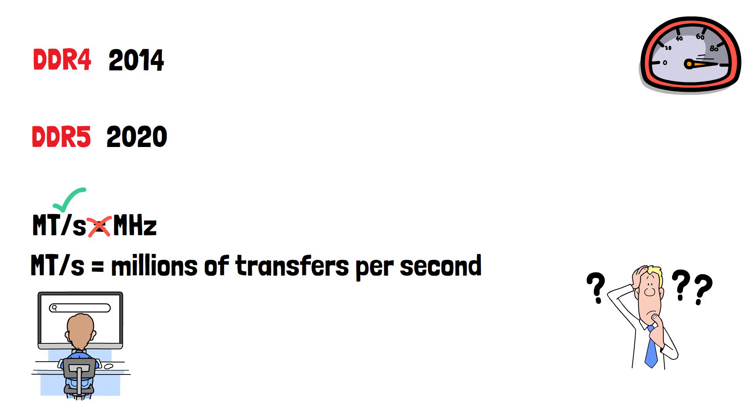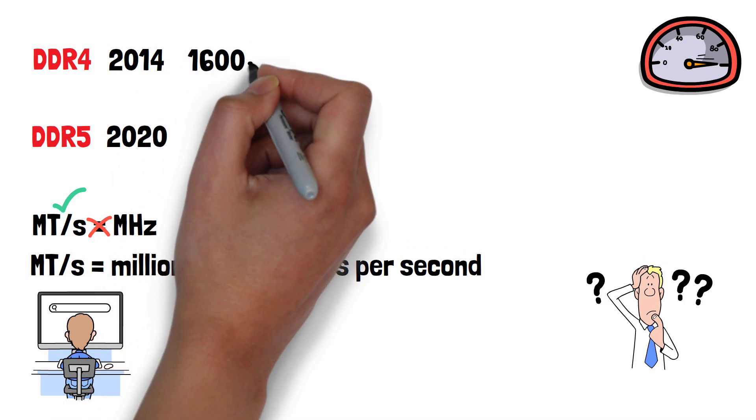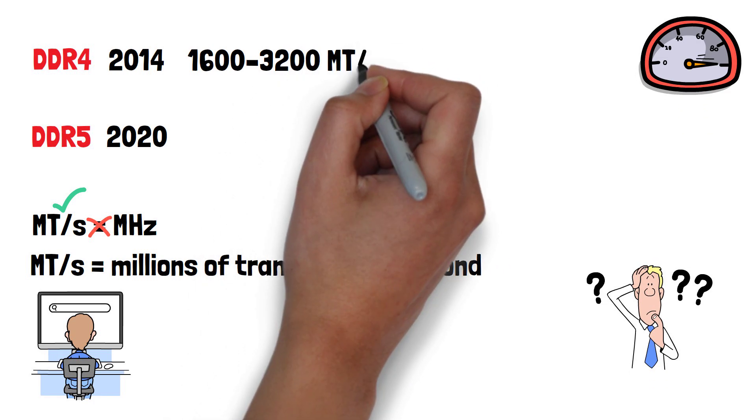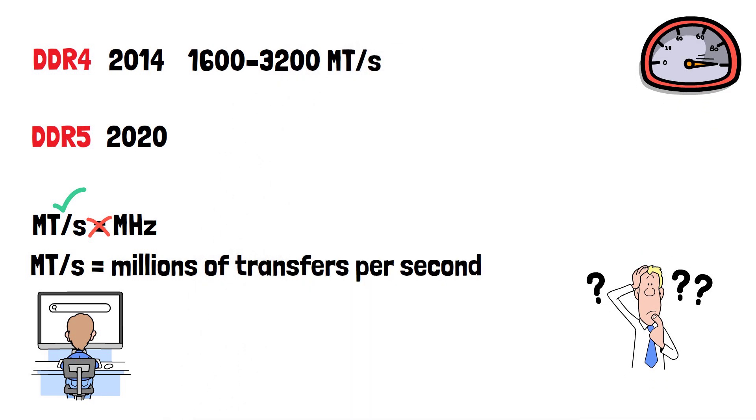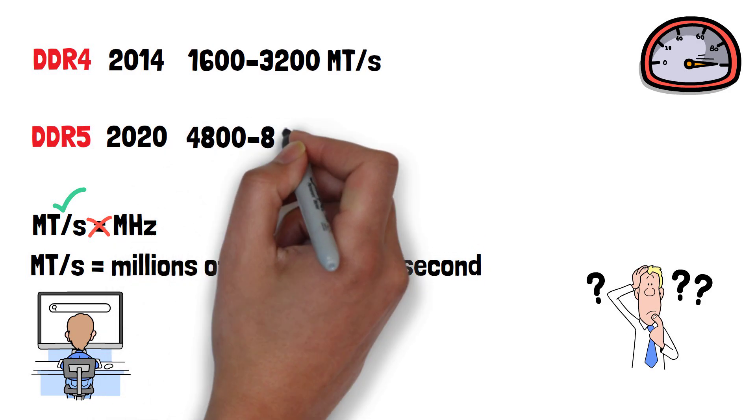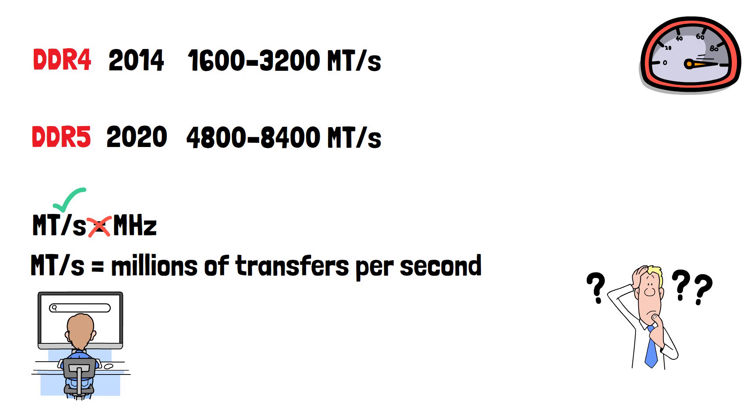DDR4 RAM typically has a speed of 1,600 to 3,200 megatransfers per second, whereas DDR5 has a speed of 4,800 to 8,400 megatransfers per second, so is clearly faster than DDR4.